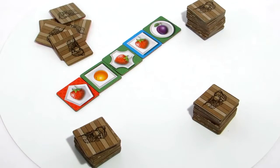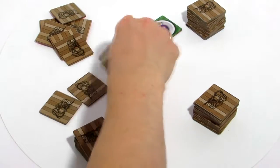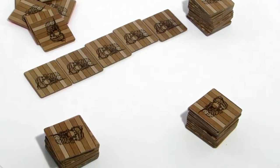When there are no facedown tiles left, the tiles are flipped over again. The player who got rid of all his tiles wins the game.